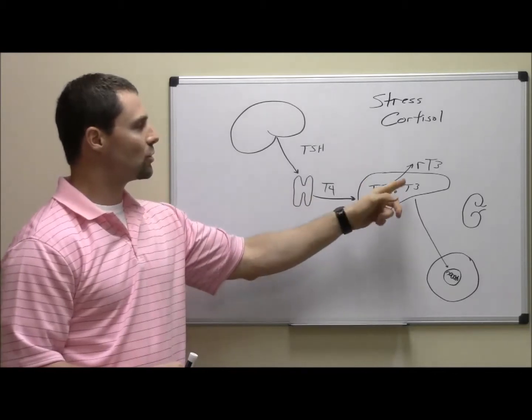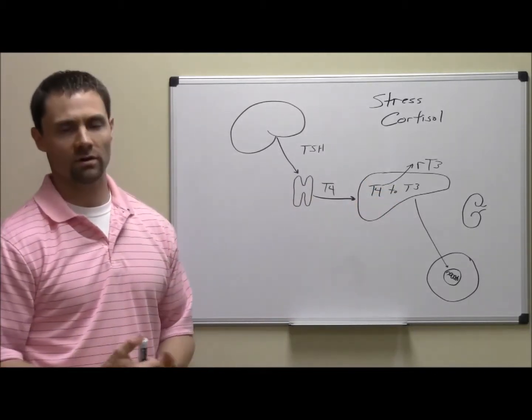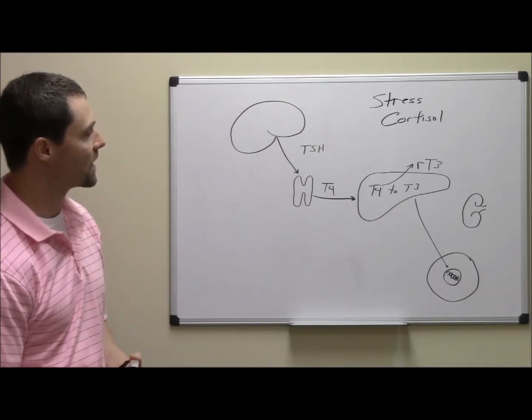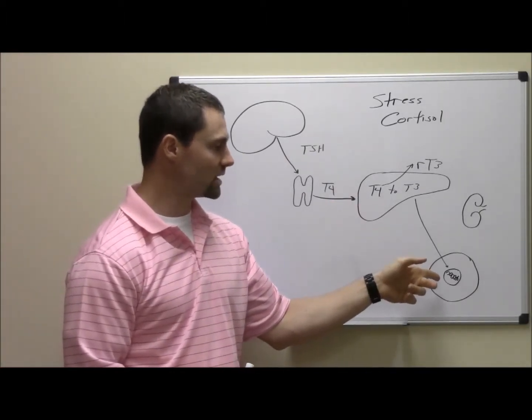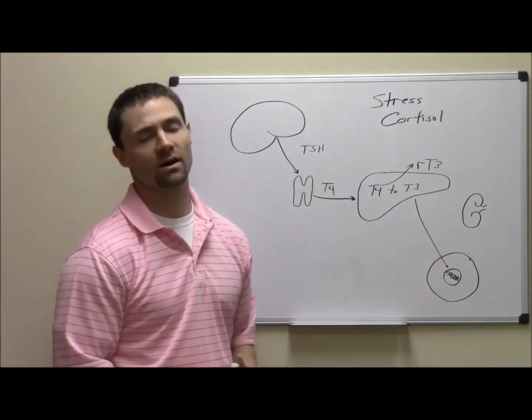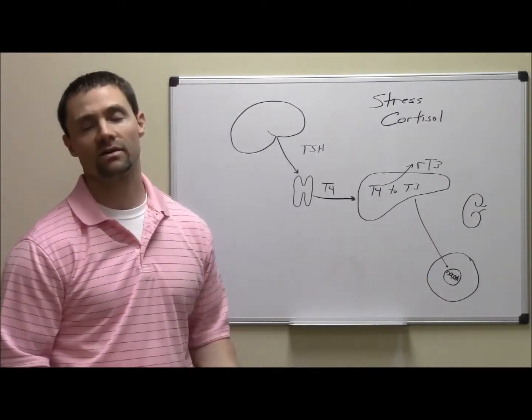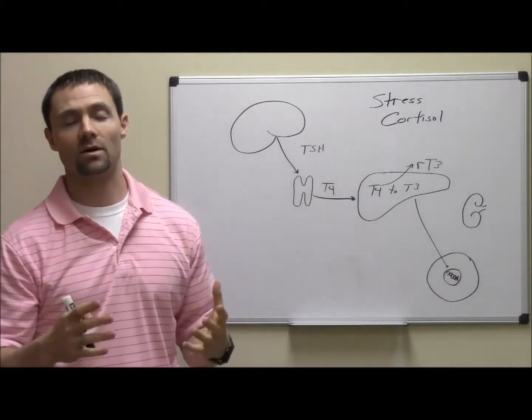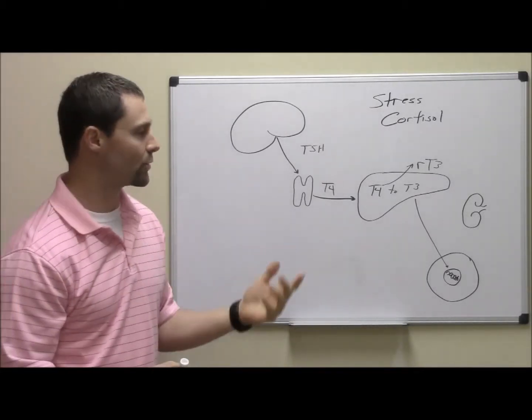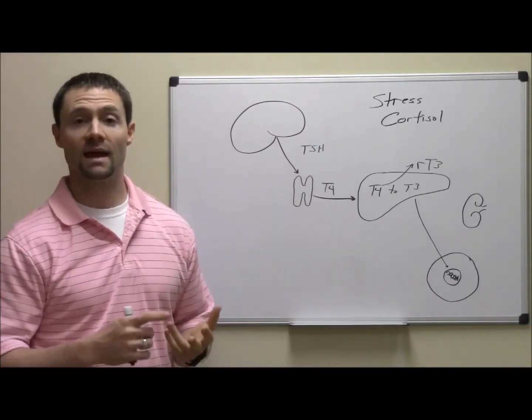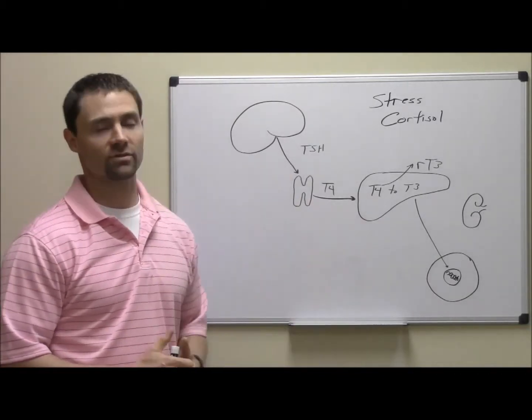Once that's made, again going back to the conversion here, we talked a little bit earlier about selenium. Selenium is needed in this process, and then going down to the cell itself, you're also going to need zinc here to make sure that the cell can take up and utilize the thyroid hormone efficiently. We also know that vitamin A, vitamin D, and iron are also involved in these different steps as well.